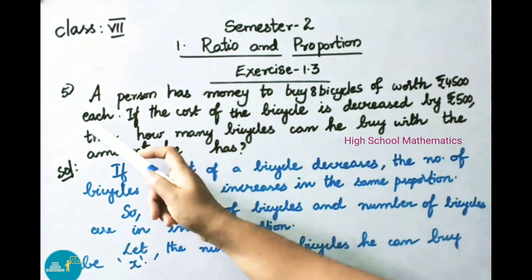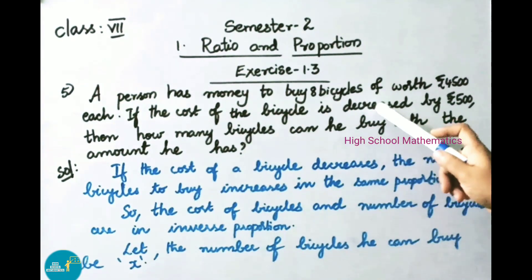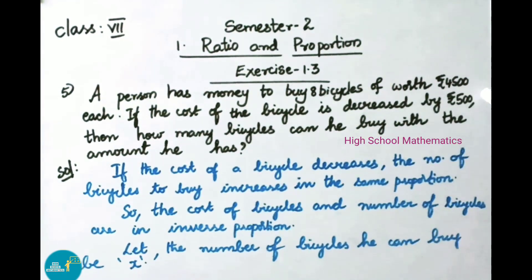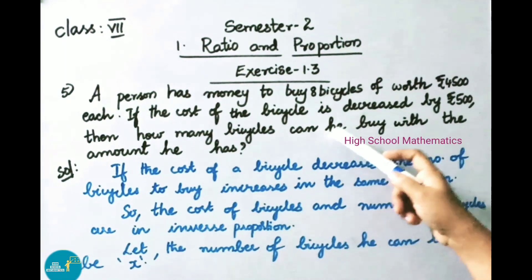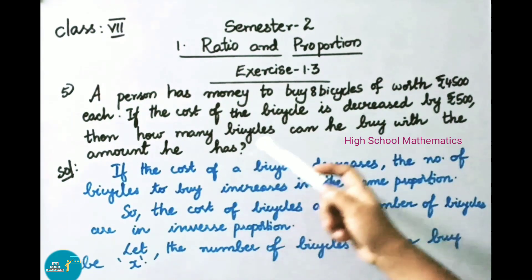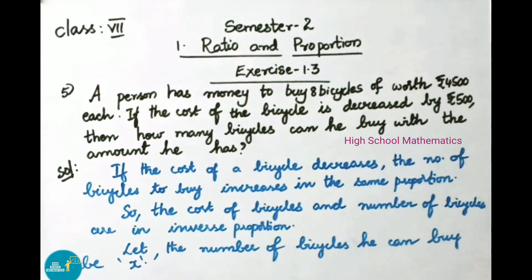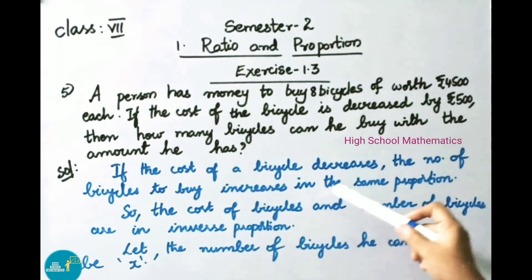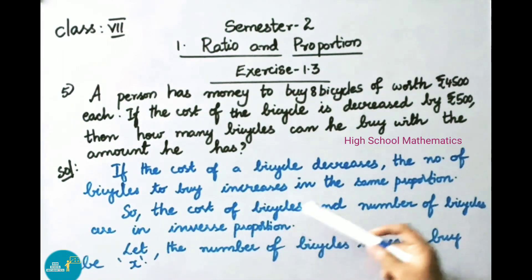See now question number 5. A person has money to buy 8 bicycles worth Rs. 4,500 each. If the cost of the bicycle is decreased by Rs. 500, then how many bicycles can he buy with the amount he has? Let us see the solution. If the cost of a bicycle decreases, the number of bicycles to buy increases in the same proportion.